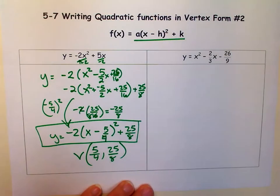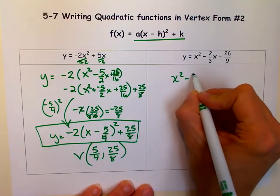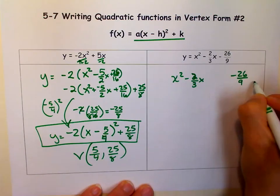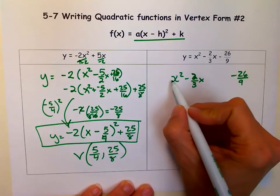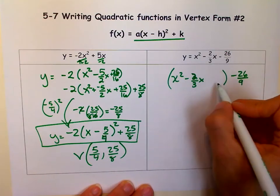Okay, let's try this one. So we're going to write down x squared minus 2 thirds x. And we're going to move that 26 ninths over there. A is 1, so we don't have to worry about factoring anything out. But I'm going to put that in parentheses.